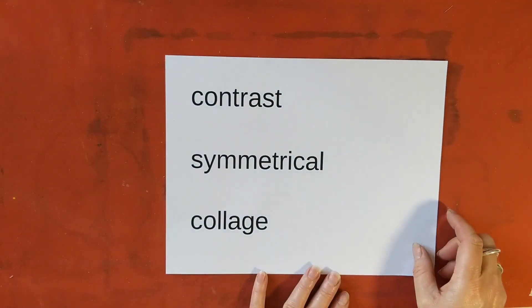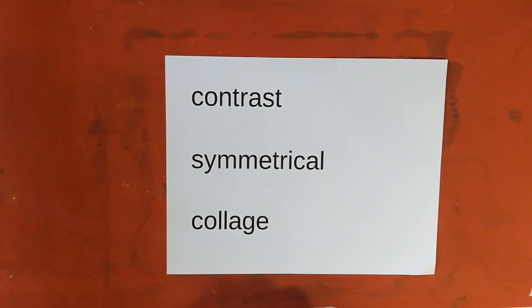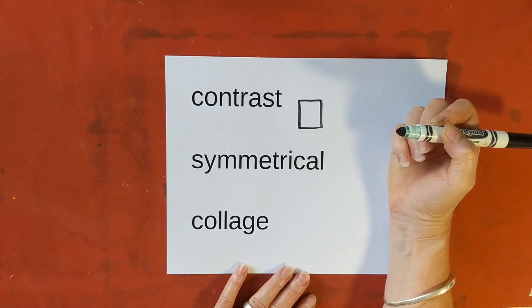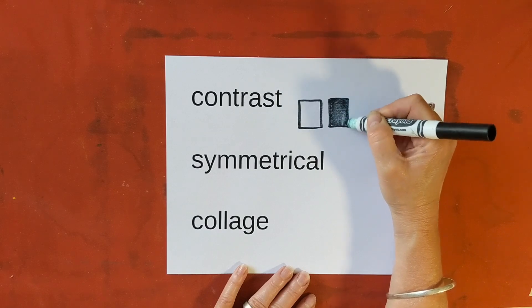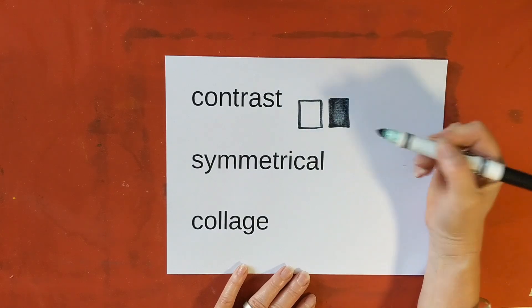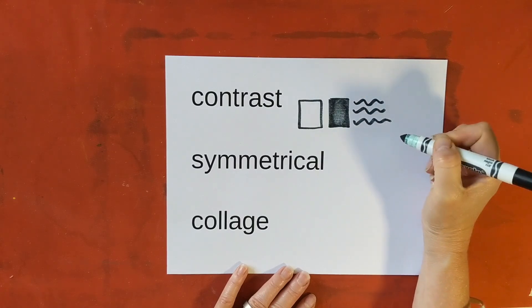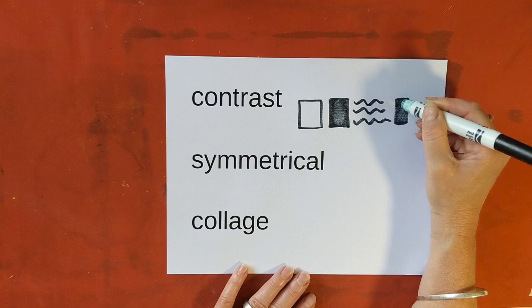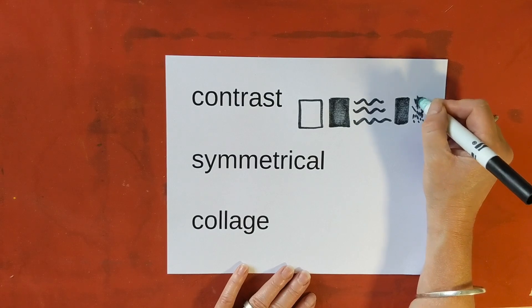The words we're going to use today are contrast, symmetrical, and collage. Contrast is differences between things — it could be the difference between something being light or dark, something being plain or with a pattern over it, or something being plain or smooth versus having a texture over it, like feeling bumpy or furry.